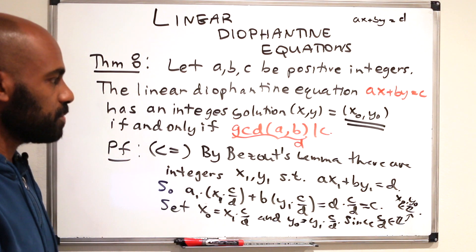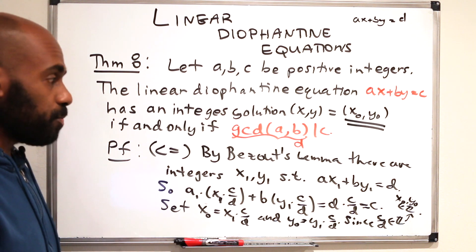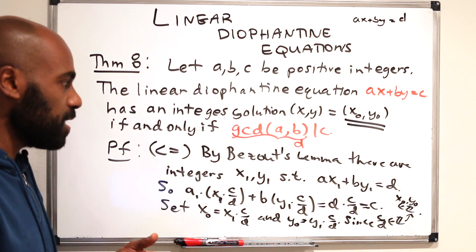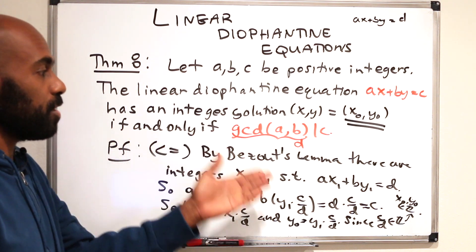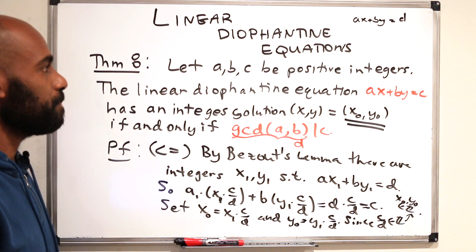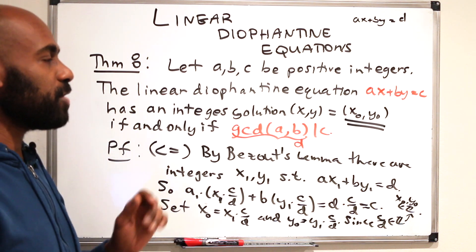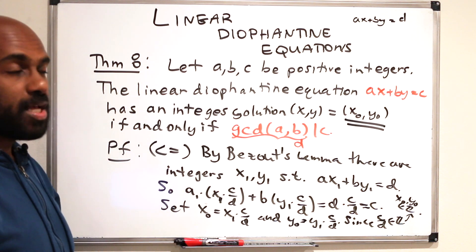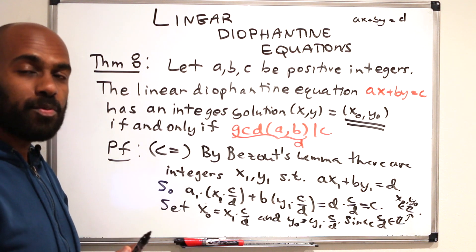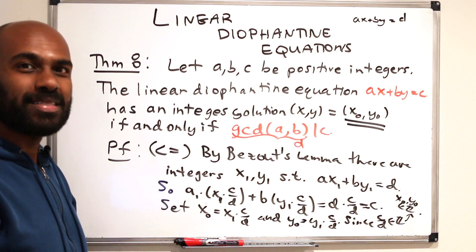This is a nice proof because it takes exactly what we did in the examples and writes it out in general form. So now we have a complete characterization of when a solution exists. Our next question is: when we do have a solution, how do we find all the solutions? Let's look at an example.